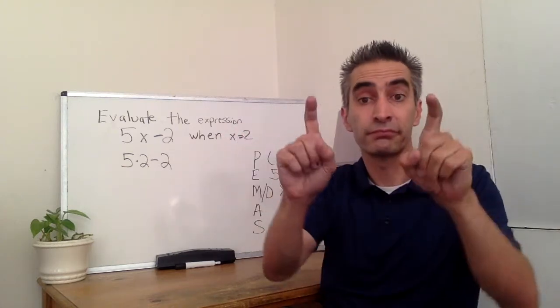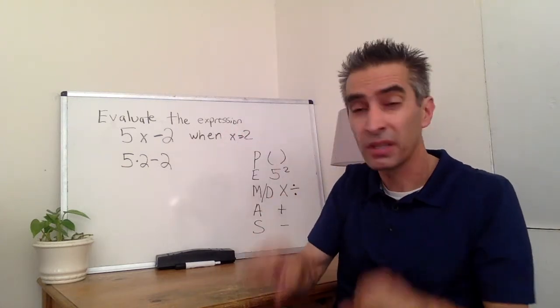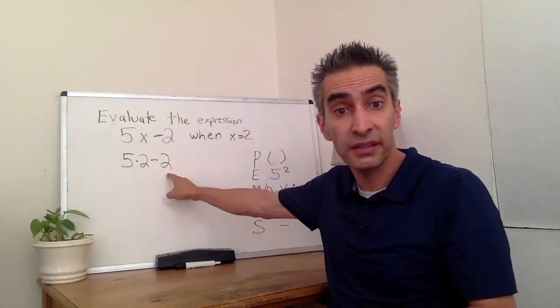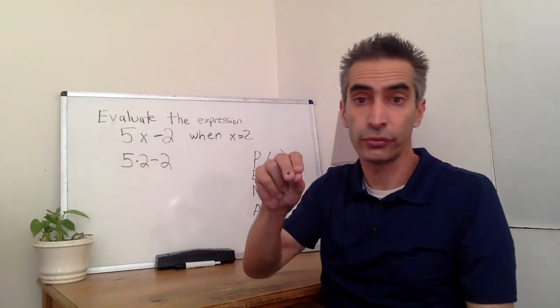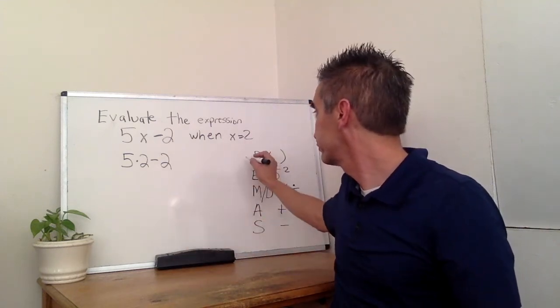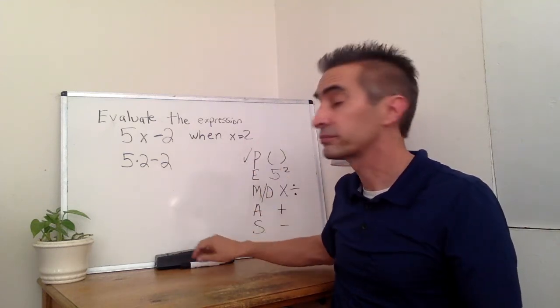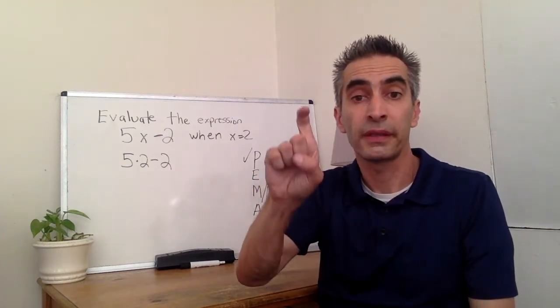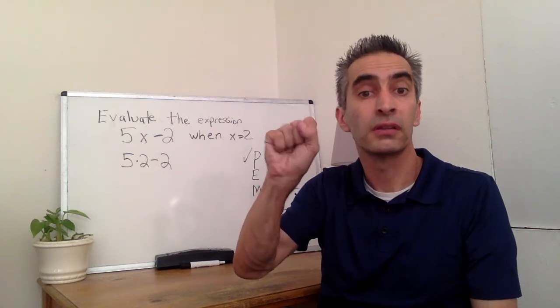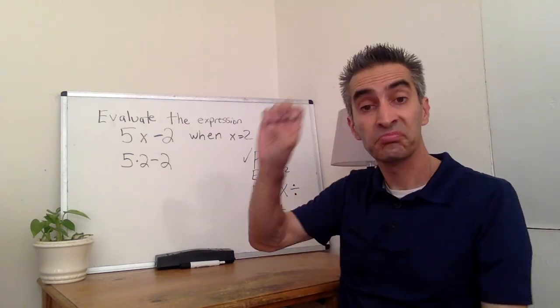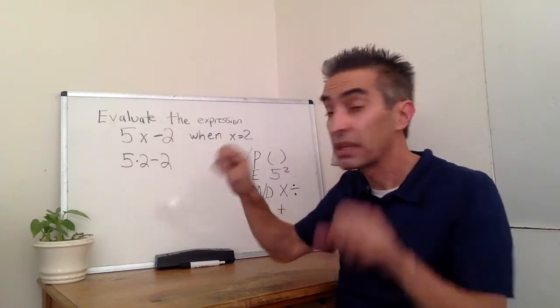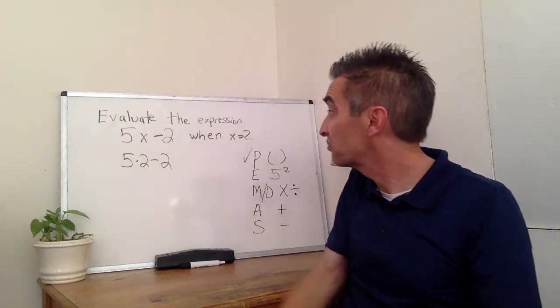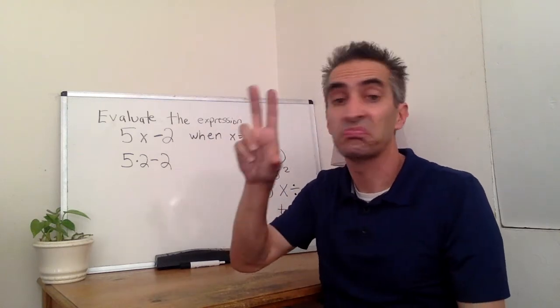Where do we start? Parentheses. Can you see any parentheses? No. Next, exponents. Can you see any exponents? Nope.